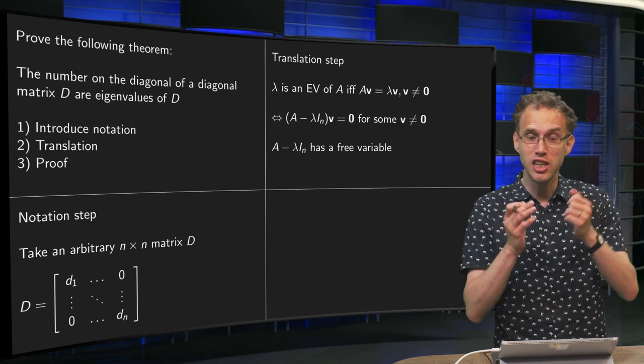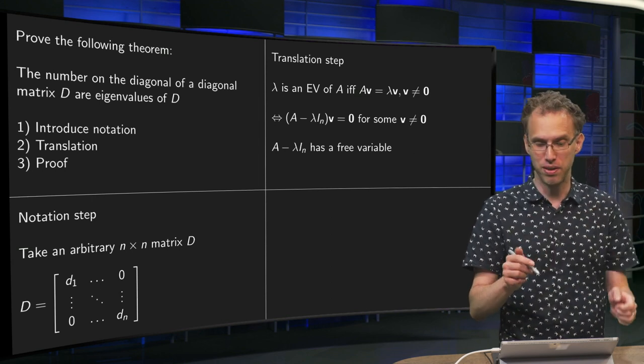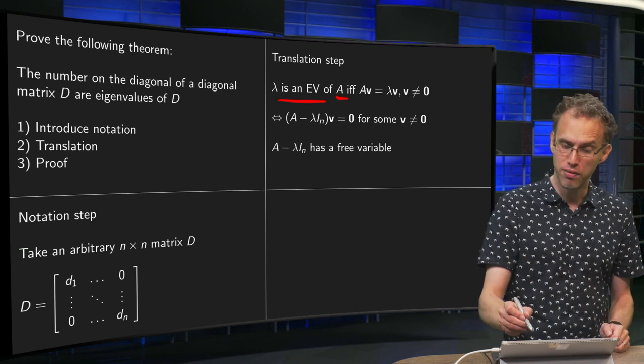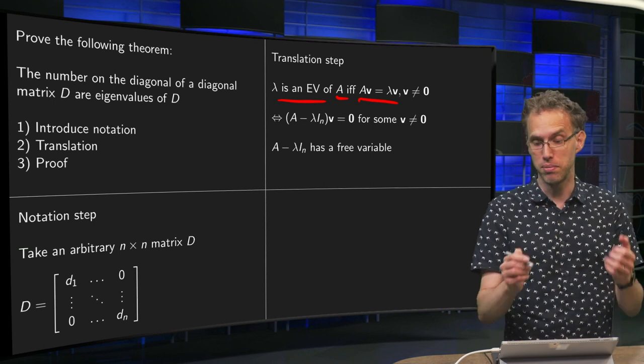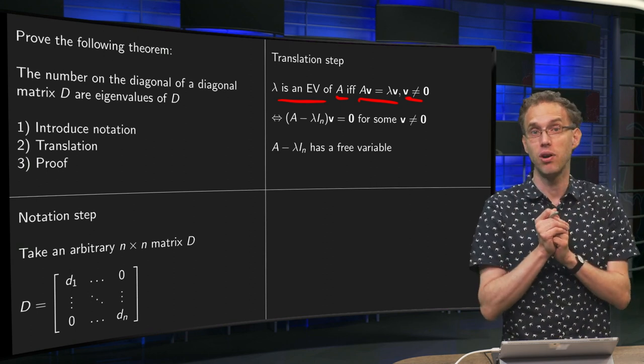Then two, the translation step. What does it mean to be an eigenvalue? Well, λ is an eigenvalue of a matrix A if and only if A times v equals λ times v, where v is not the zero vector. That means that you are an eigenvalue.